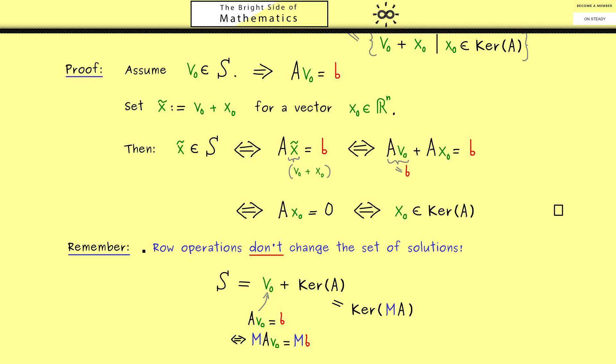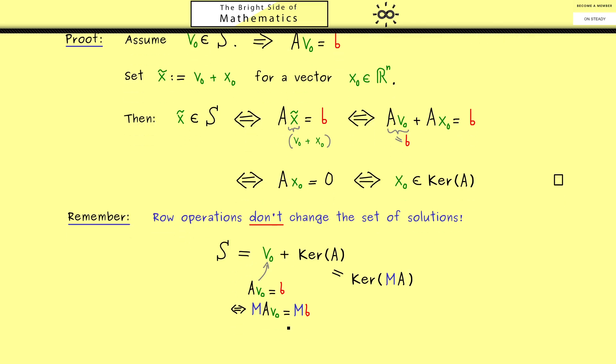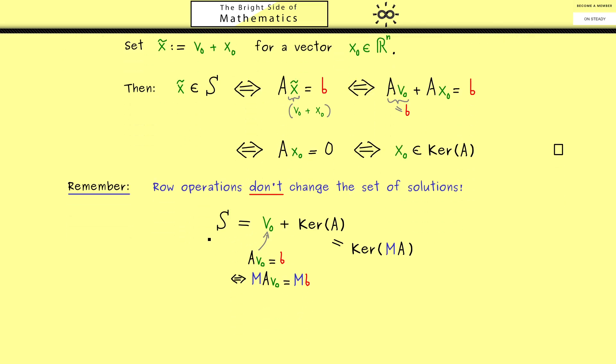Therefore, using row operations is the perfect manipulation for a system in order to find the set of solutions. Hence, this idea will lead us to the algorithm we already know by name, it's the Gaussian elimination.